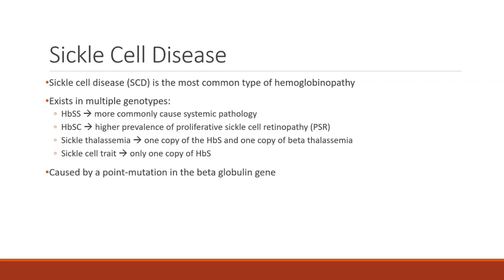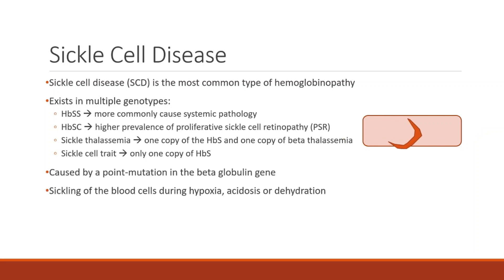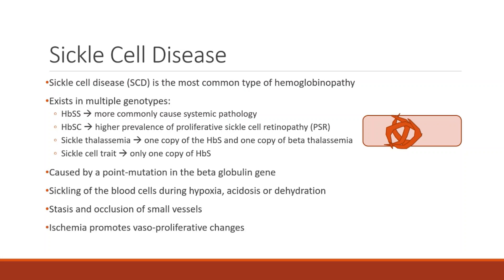Sickle cell disease is caused by a point mutation in the beta-globin gene, resulting in the 6th amino acid substituting valine for glutamic acid. This valine substitution causes beta-globin to polymerize when not bound to oxygen. Small capillaries require a red blood cell with a flexible membrane to pass through. Sickling of the blood cells occurs during hypoxia, acidosis, or dehydration, as these are the states where oxygen is not bound to the beta-globin. Sickling causes the red blood cells to have a rigid membrane and occlude small vessels while damaging the arterial endothelium. Occlusion causes downstream ischemia and induces vasoproliferative changes.